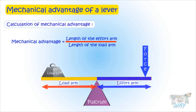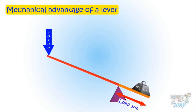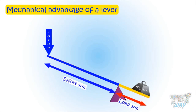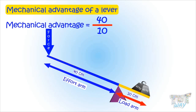Let's learn it with examples. This is the load arm of this lever — the distance from the load to the fulcrum — and this is the effort arm — the distance from the effort to the fulcrum. The length of the effort arm is 40 centimeters and the length of the load arm is 10 centimeters. 40 divided by 10 gives us 4, so the mechanical advantage of this lever is 4.